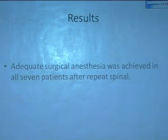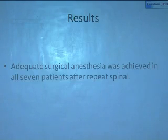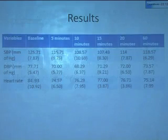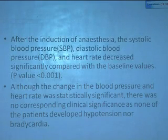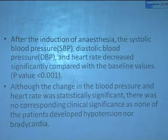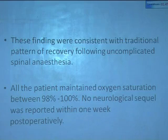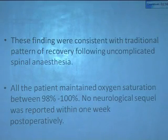Results: adequate surgical anesthesia was achieved in all seven patients. We did only seven patients, and our endpoint was whether we needed to convert to general anesthesia or not, but we were able to achieve adequate surgical anesthesia in all cases. Systolic blood pressure, diastolic blood pressure, and heart rate decreased significantly compared to baseline value. Although the changes were statistically significant, there was no corresponding clinical significance as none of the patients developed hypotension or bradycardia. These findings were consistent with traditional pattern of recovery following uncomplicated spinal anesthesia. All patients maintained oxygen saturation of 98 to 100 percent, and no neurological sequelae were reported within one week post-operatively.